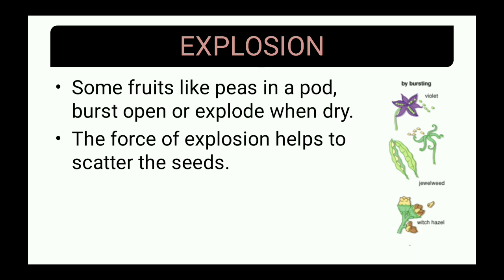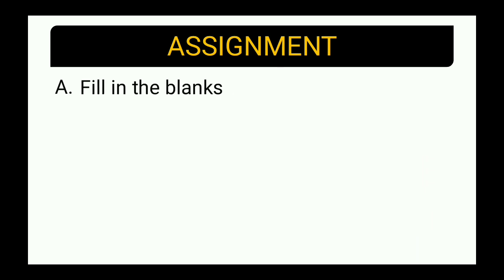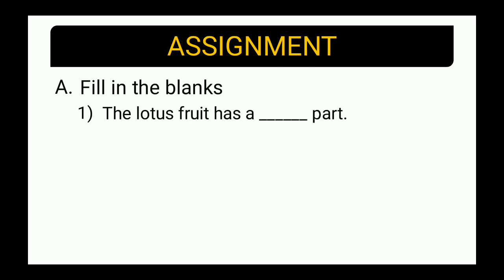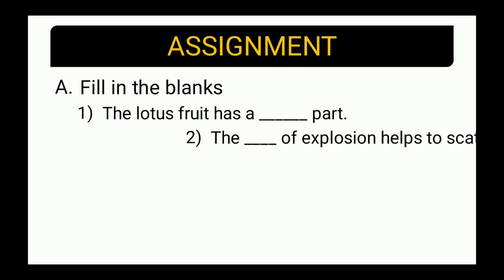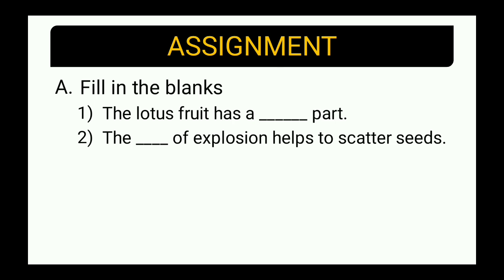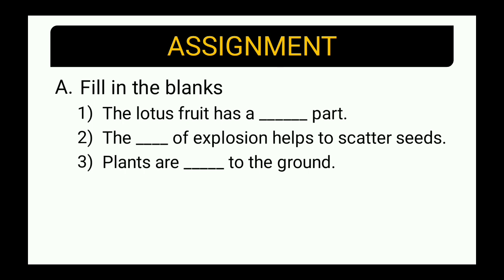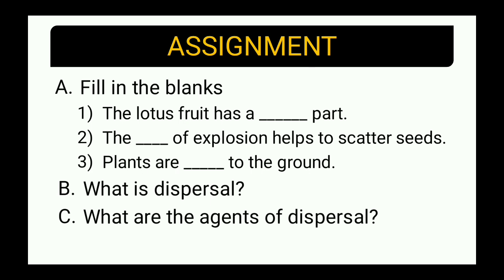That was all for today. We learned about the various agents of dispersal of seeds. Now for the assignment — fill in the blanks: first, the lotus fruit has a dash part; second, the dash of explosion helps to scatter seeds; third, plants are dashed to the ground. Question B is: what is the meaning of dispersal?